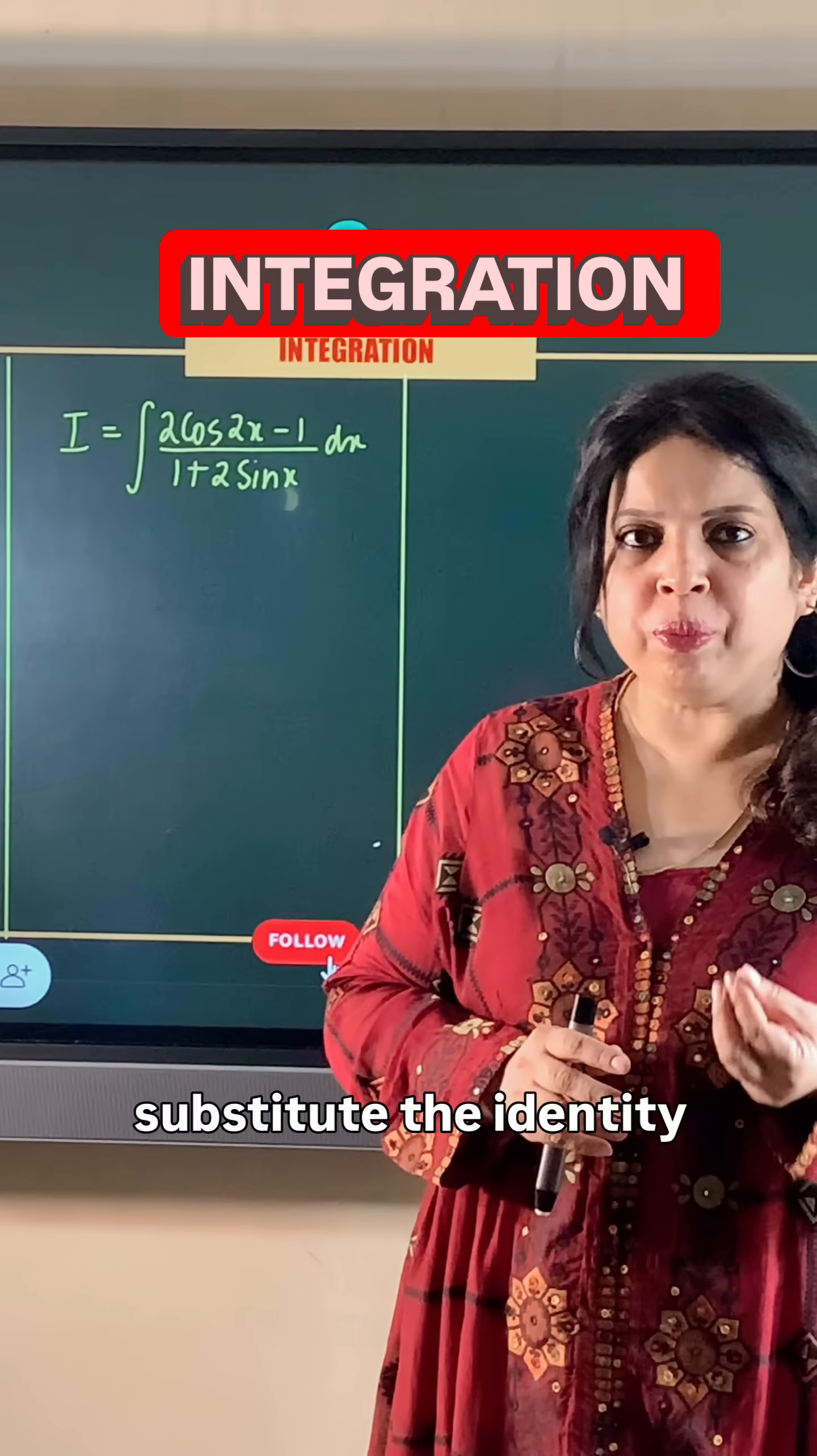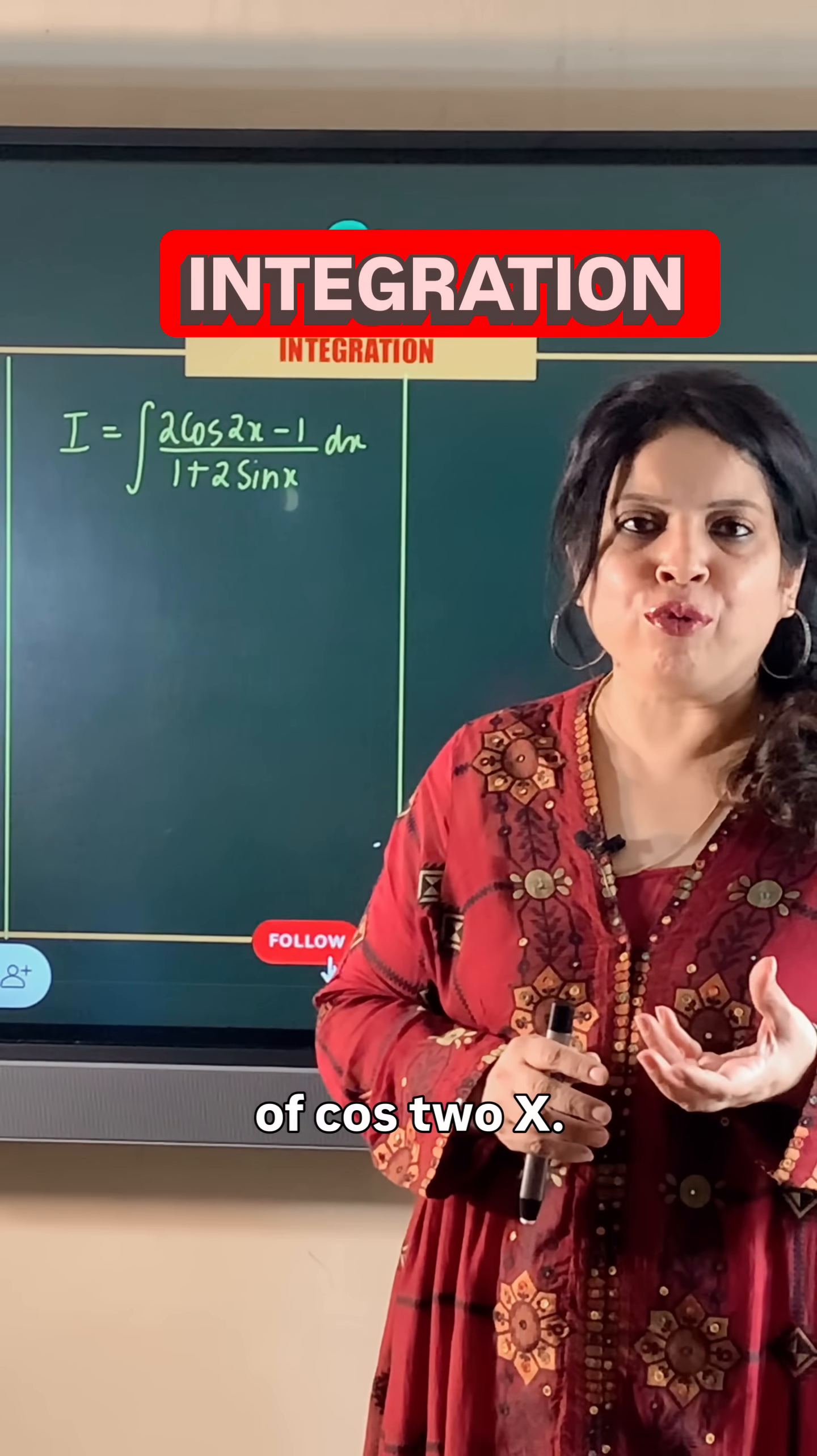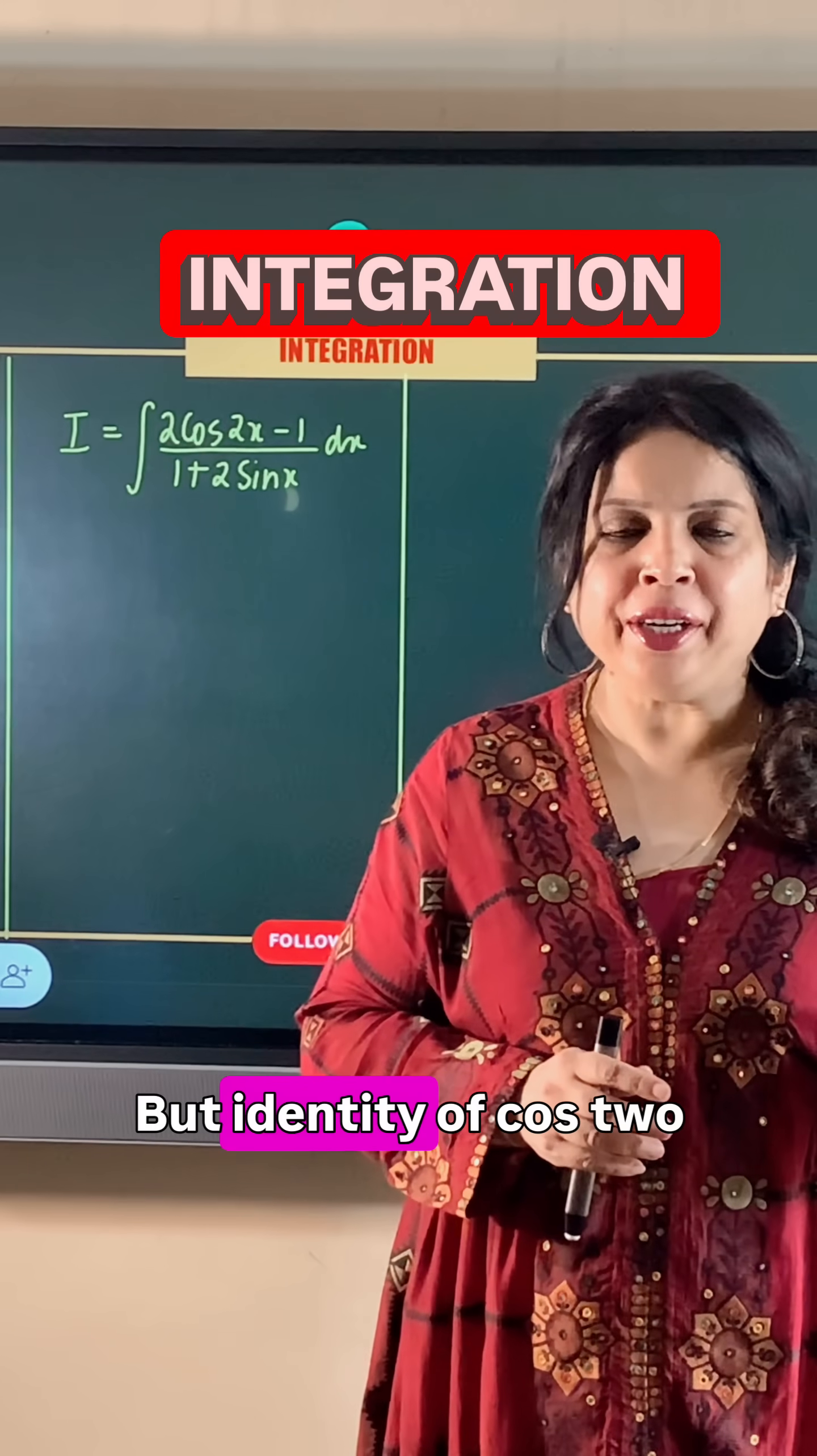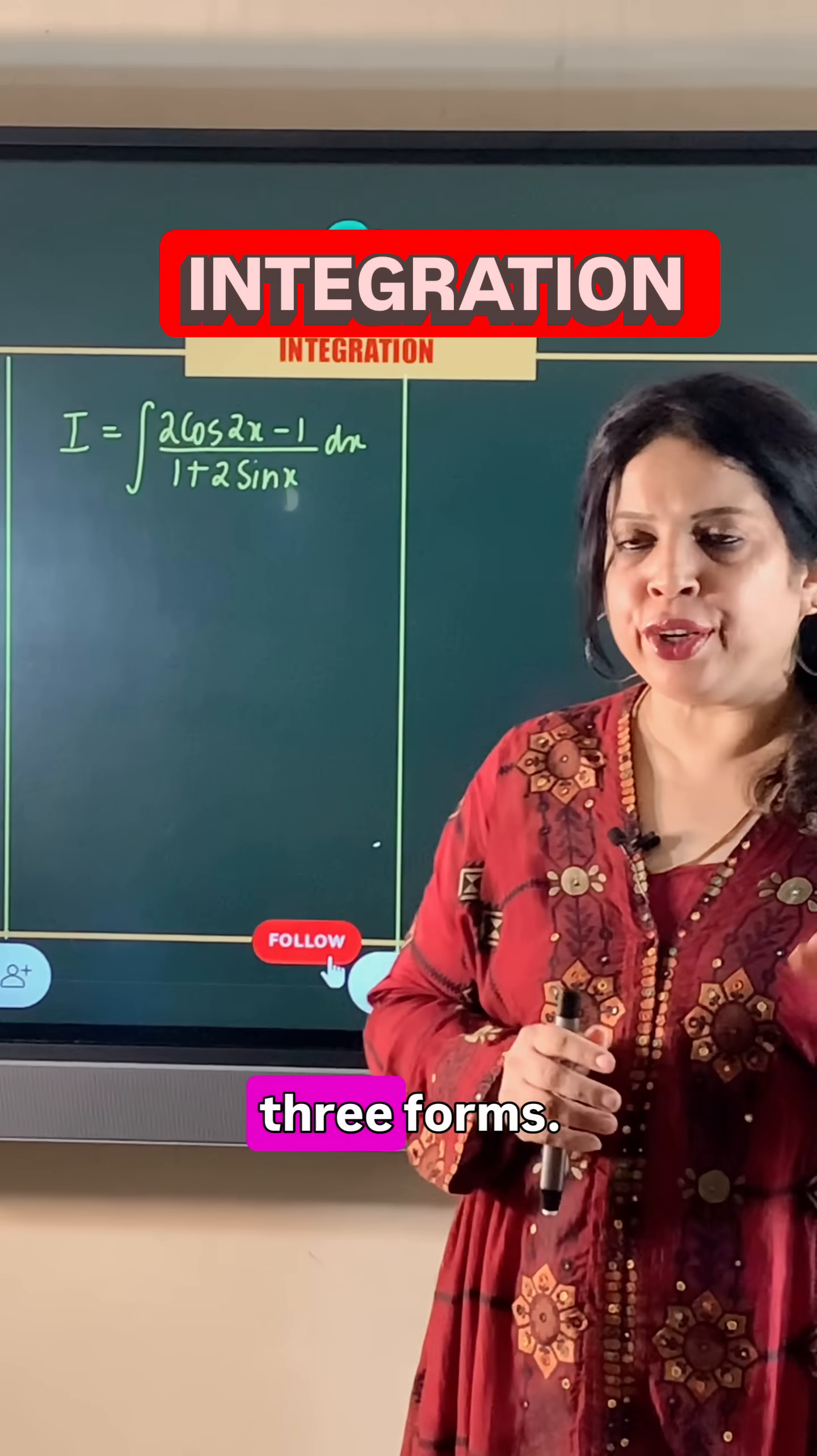We need to substitute the identity of cos2x, but the identity of cos2x can be written in three forms.